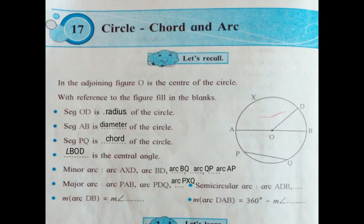Semicircular arc: Semicircular arc ADB is already given. You have to name any 1 semicircular arc. When you name semicircular arc, it should be equal distance from the center of a circle. Semicircular arcs: arc ADB and arc APB.